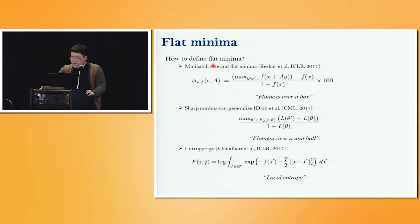Recently, this flat minima is revisited and many works are proposing their own version of flat minima. For example, flatness is measured over a box, over a unit ball, or using local entropy. We propose another more generalized version of flatness using the concept of robustness.